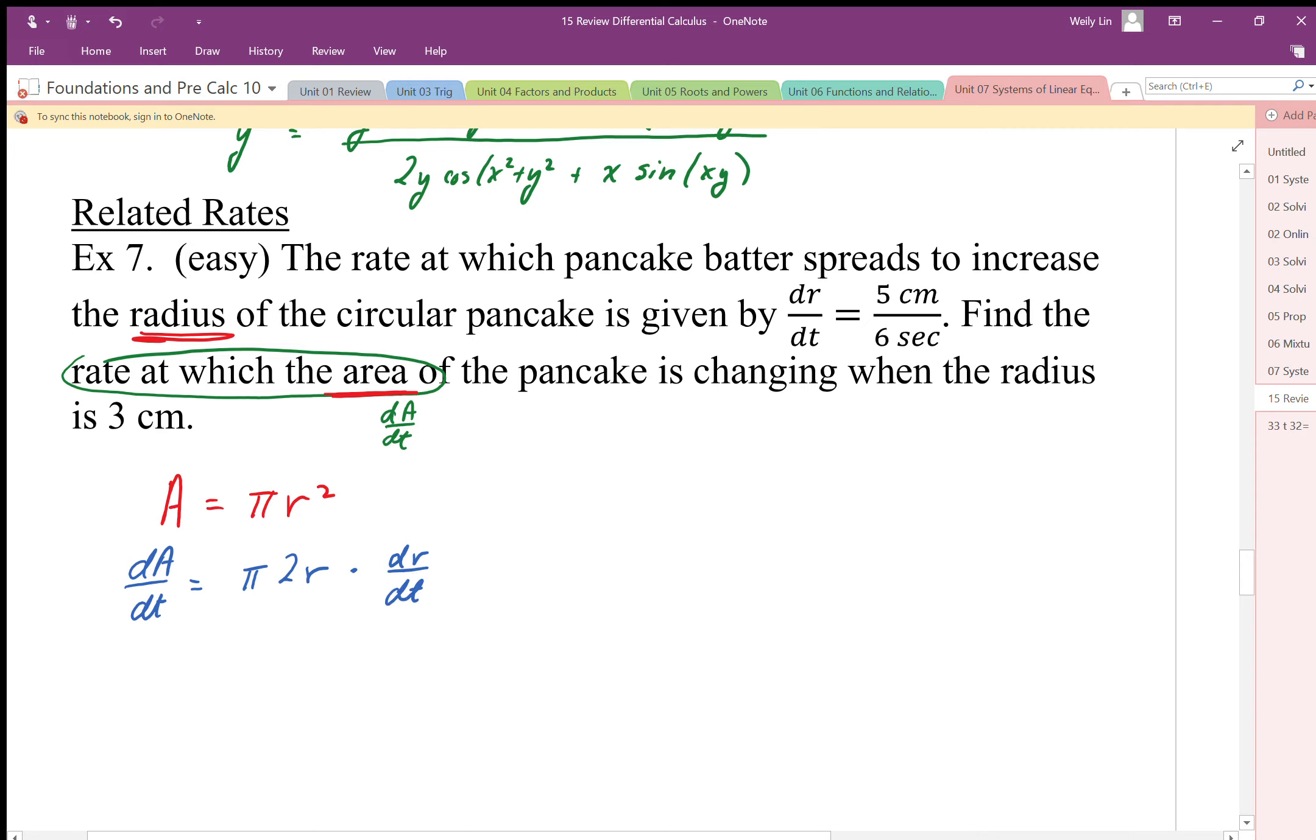At this point what we do is substitute in all the known parts and solve for the unknown part. The dA/dt is what we're solving for. We need to plug in all the other parts of this relationship. We have the radius is 3 centimeters, so I'm going to substitute that in.